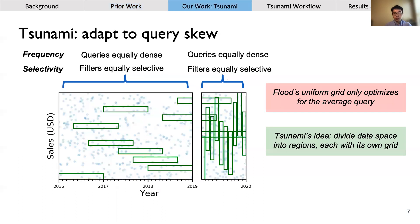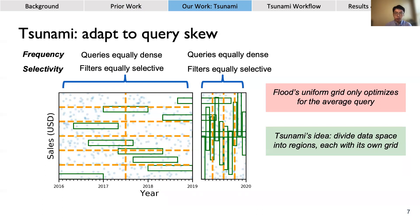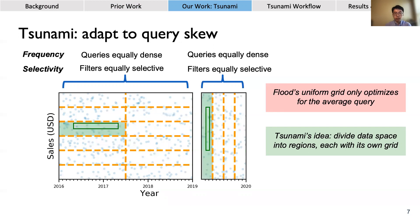Tsunami, our new index, is able to adapt to query skew. Our key idea is to divide data space into disjoint regions so that within each region, the workload is not skewed. For example, we divide data space based on whether it's before or after 2019. Then each region gets its own independent grid specialized for only the queries that fall in that region. Using Tsunami's layout, we're able to run this workload while scanning much less data than Flood.